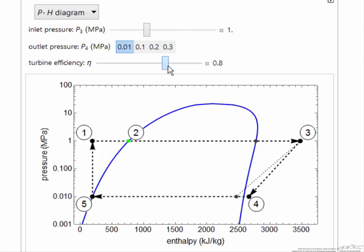As we increase the efficiency, then we approach close to the reversible line, so this dotted line is reversible. If we get closer to reversible, we would do that.